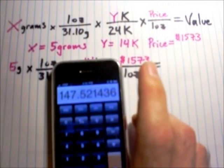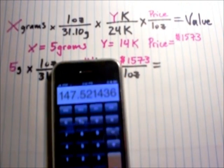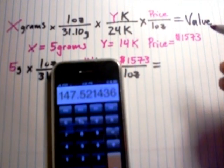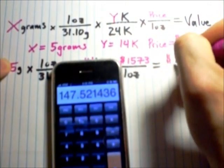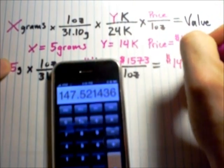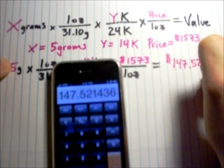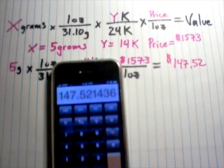Okay? So, 5 grams of a 14 carat gold ring is going to be worth 147 dollars and 52 cents.